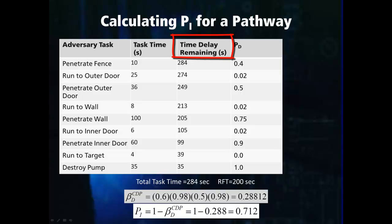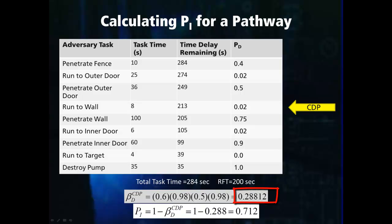Now look at the time delay remaining column and notice that after penetrating the wall, there is only 105 seconds left in the adversary's attack path. This means that if the adversary is not detected before completing this task, the response force will not be able to respond in time to stop them. The last point of timely detection is therefore before the adversary reaches the wall. We can now determine the probability of interruption using the non-detection probabilities for the first four tasks. The calculation results in a non-detection probability of 0.28812. PI is just the inverse of this and is therefore 0.712, meaning the guard force has a 71.2% chance of interrupting the adversary if the adversary chooses to take this path.